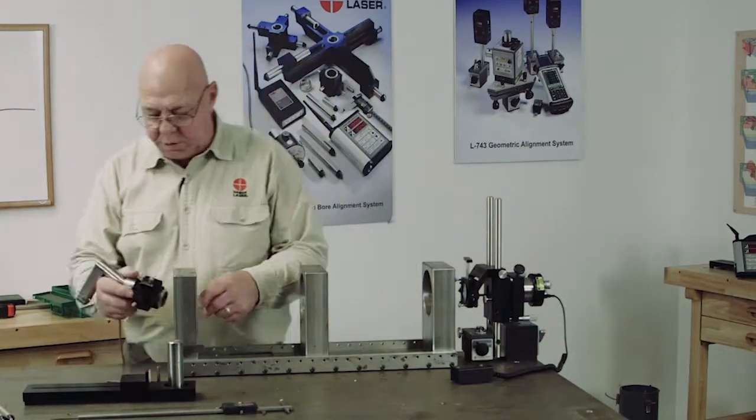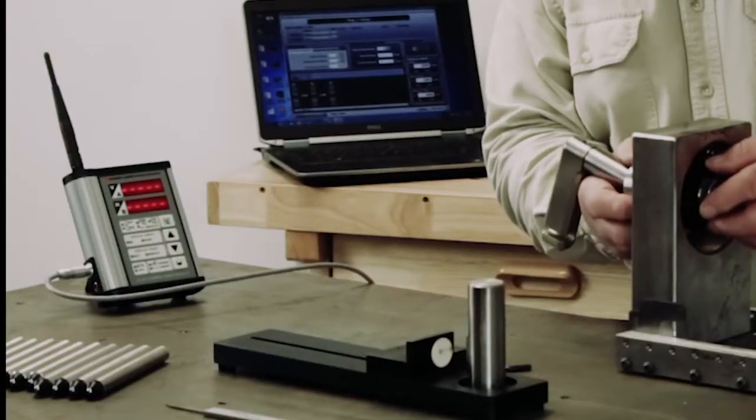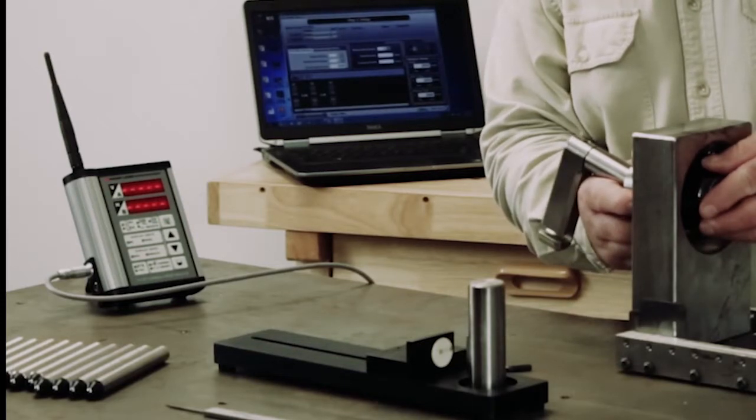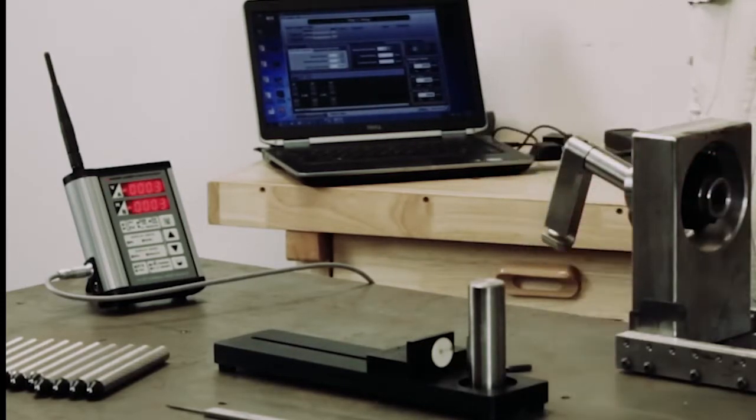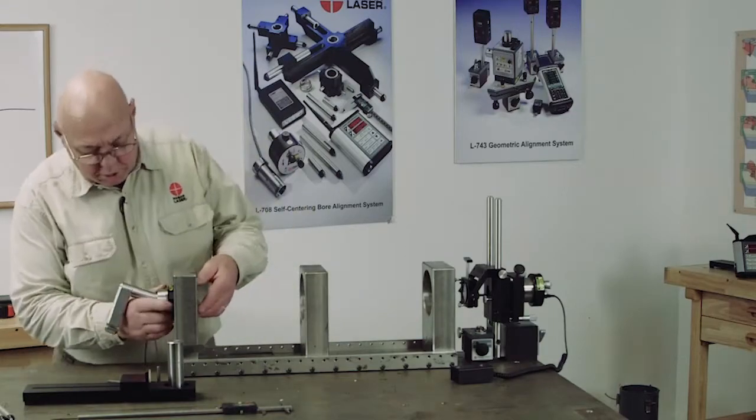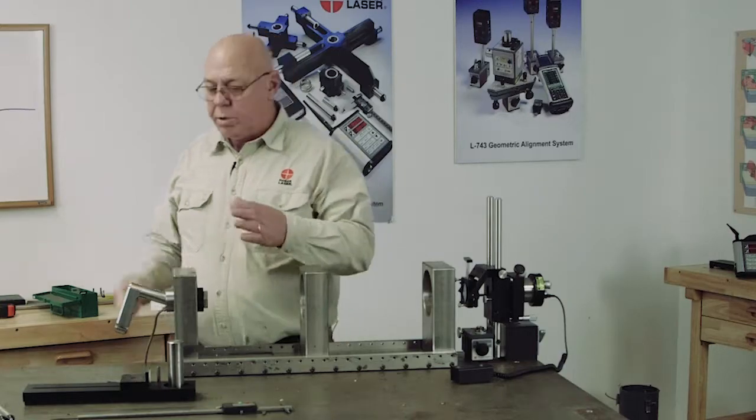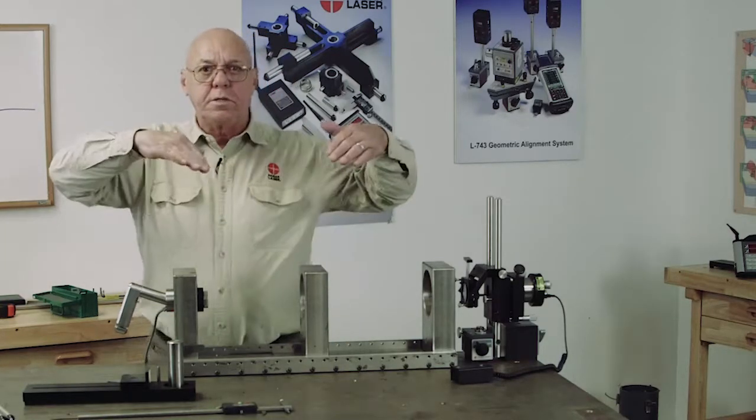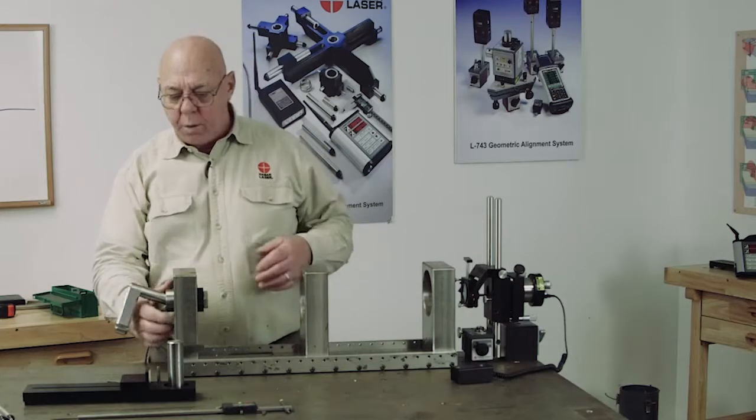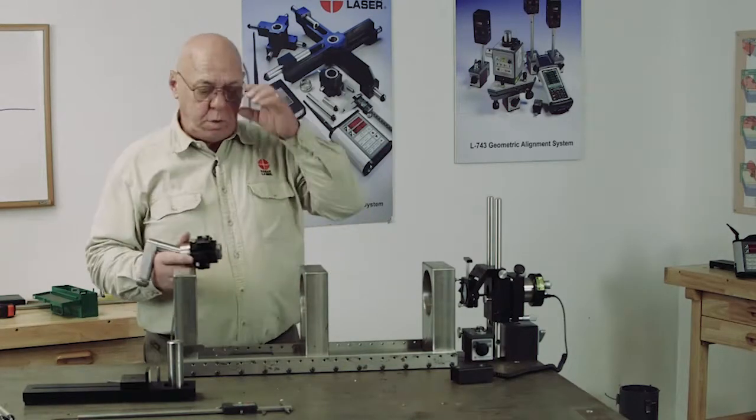The same way here. I measured in the back, and here back here, I'm pretty much at zero. So if I move this to the front, I can see I'm two thousandths low in the front. This is the opposite. So we can actually measure the angle of the bores that way as well.